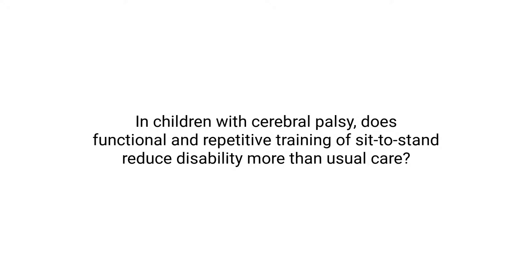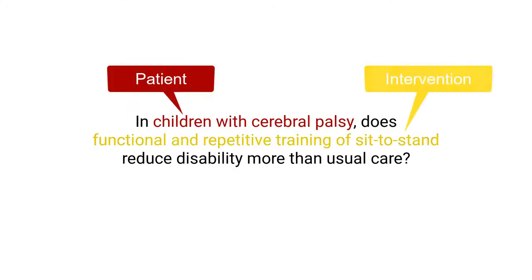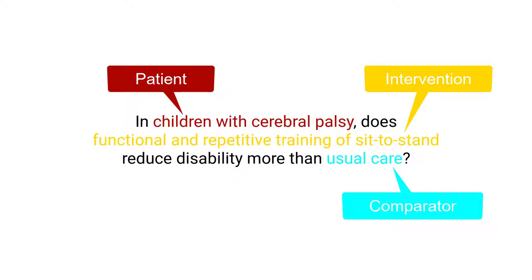This question contains all of the PICO components. P for patient is children with cerebral palsy. I for intervention is functional and repetitive training of sit-to-stand. C for comparator is usual care. O for outcome is disability.